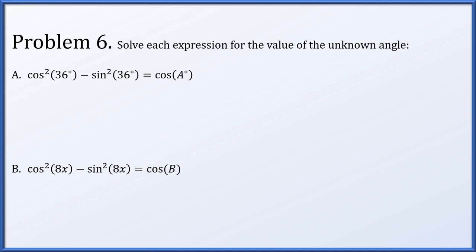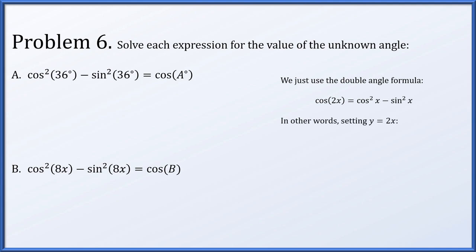In problem 6, let's solve each expression for the value of the unknown angle. We really just need the double angle formula: cosine of 2x equals cosine squared x minus sine squared x. In other words, if we replace y with 2x, we get cosine of y equals cosine squared of y over 2 minus sine squared of y over 2. So in the first part, if we set 36 degrees to be a degrees over 2, we have cosine squared of a over 2 minus sine squared of a over 2 equals cosine a.